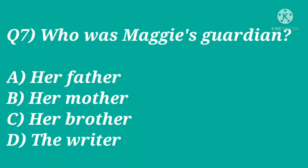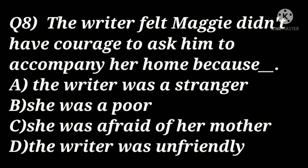Question 8: The writer felt Maggie didn't have the courage to ask him to accompany her home because — the writer was a stranger, she was poor, she was afraid of her mother, or the writer was unfriendly? The correct answer is: the writer was a stranger.